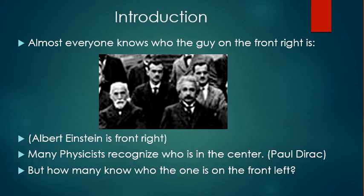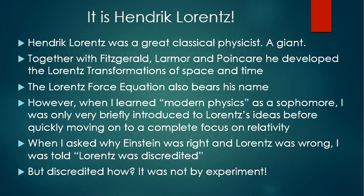Almost everyone knows who the guy on the front right is — Albert Einstein. Many physicists recognize who is in the center: it's Paul Dirac. But how many know who the one is on the front left? It's Hendrik Lorentz. Hendrik Lorentz was a great classical physicist — a giant. Together with Fitzgerald, Larmor, and Poincaré, he developed the Lorentz transformations of space and time. The Lorentz force equation also bears his name.